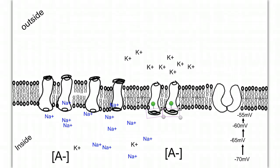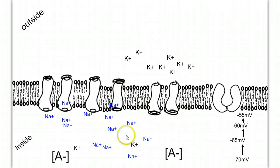At this point, we're back to our negative 70 millivolts. However, if we look at the distribution of ions, the ions are not back at their starting positions. The sodium is now in and the potassium is out, and we need to fix that in order to put the water behind the dam, or to reload the gun to fire again.